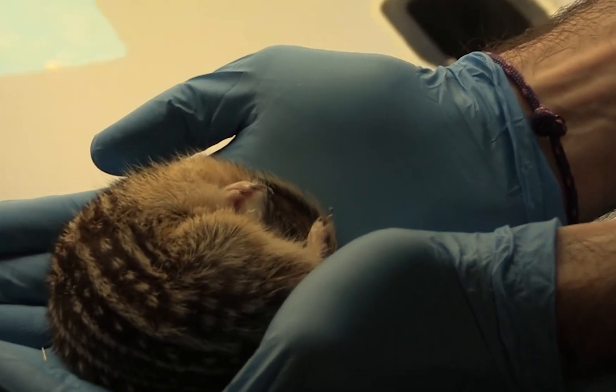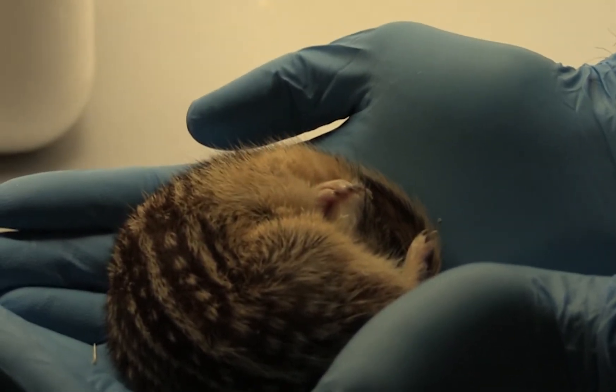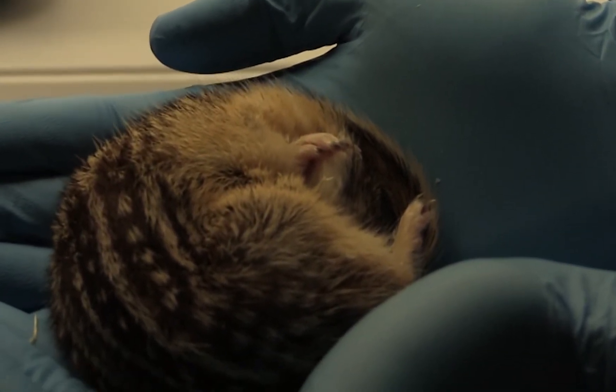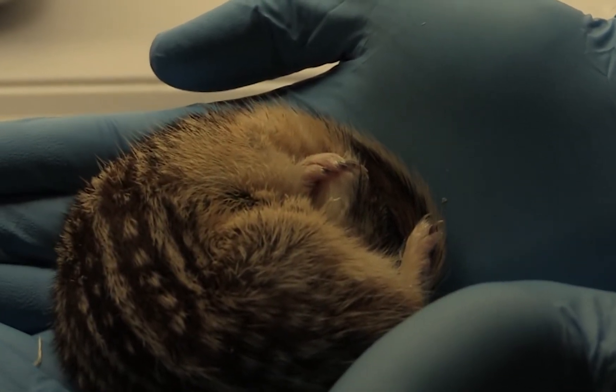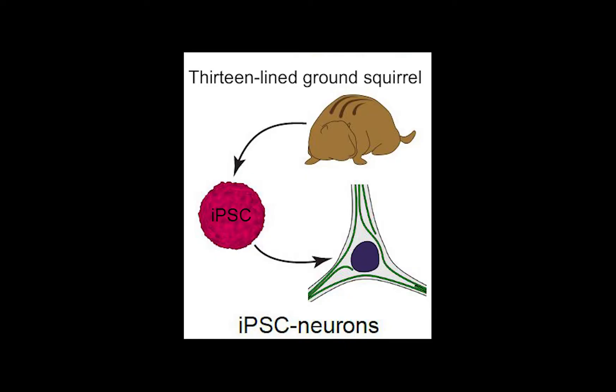There are many challenges in conducting hibernation research. For example, there are no transgenic hibernator models available, and there is limited accessibility to neonatal tissues for culture cells. We are still unable to induce hibernation in the animals. So we made induced pluripotent stem cells, or iPSCs, from the 13-lined ground squirrels.